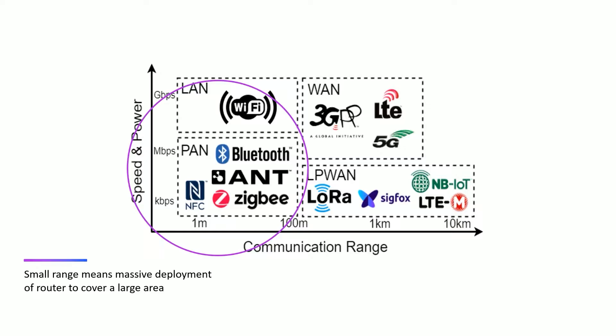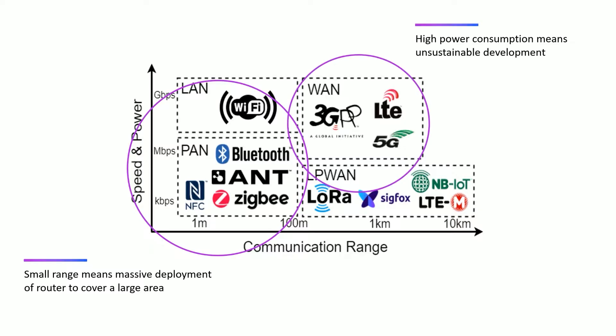We also have the traditional 3G, 4G, and in the future 5G networks. However, they are too power consuming, and that's why we need LPWAN.